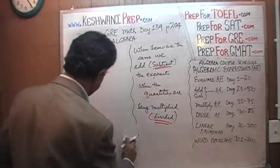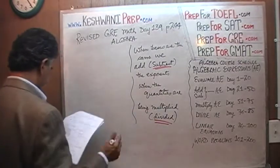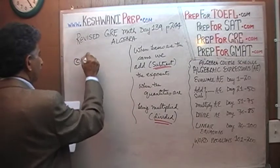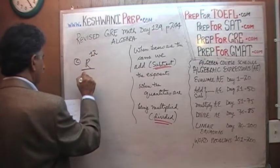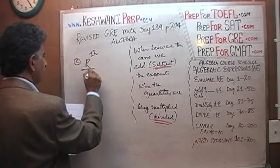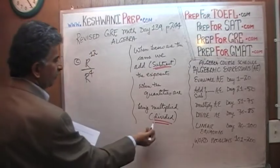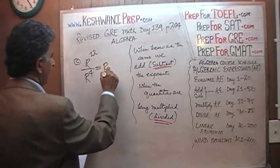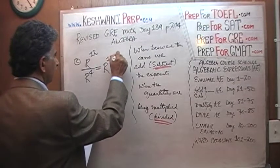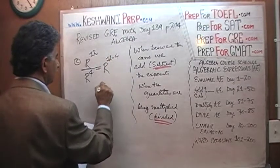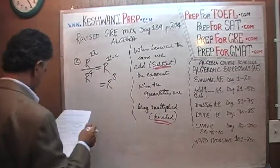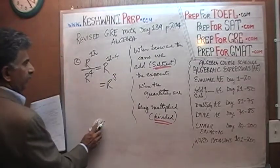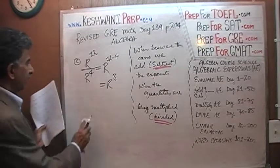Let's look at number 3, part C. C says R raised to 12 over R raised to 4. Again, the bases are the same and the quantities are being divided, so we subtract the exponents. It is simply R raised to 12 minus 4, which is R raised to 8. That's all — R raised to 8 is the answer.